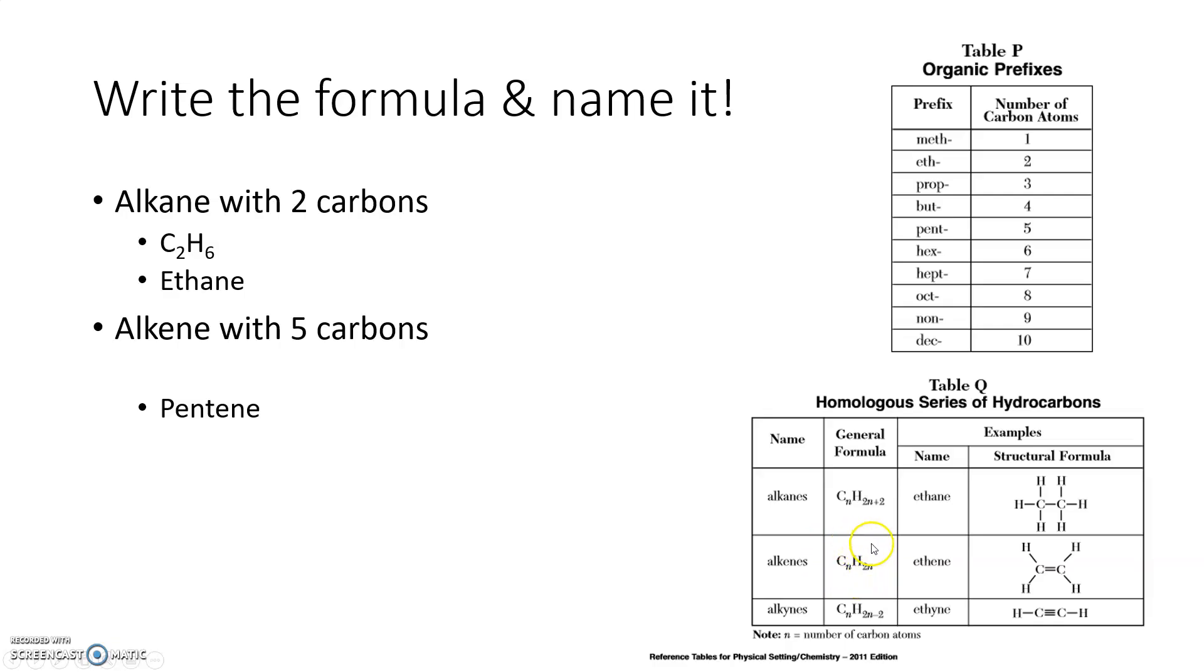Now I want to come down here. I've got to use this general formula. If you take a look, five carbons, I'm going to put the five in for this n and for this one. So C5H2 times five gives me H10. The alkene named pentene has a formula of C5H10.